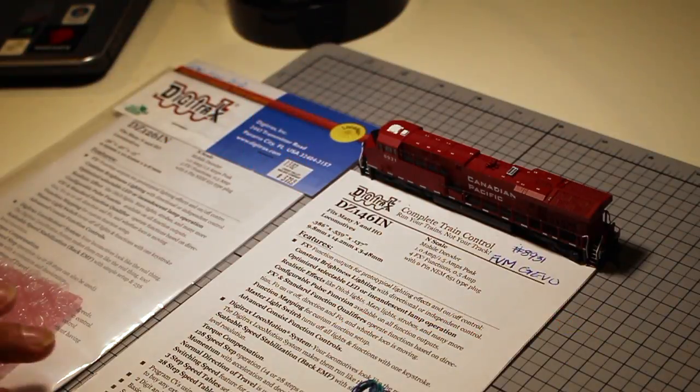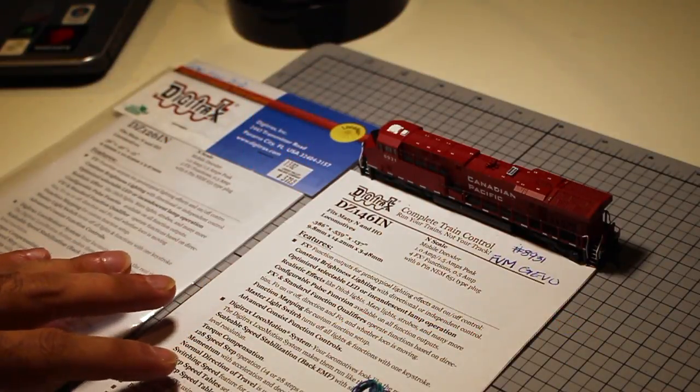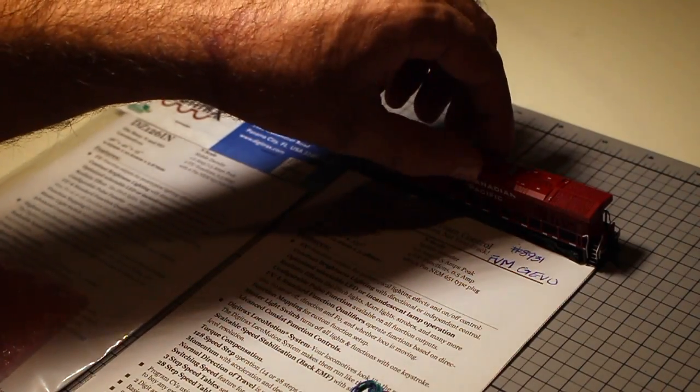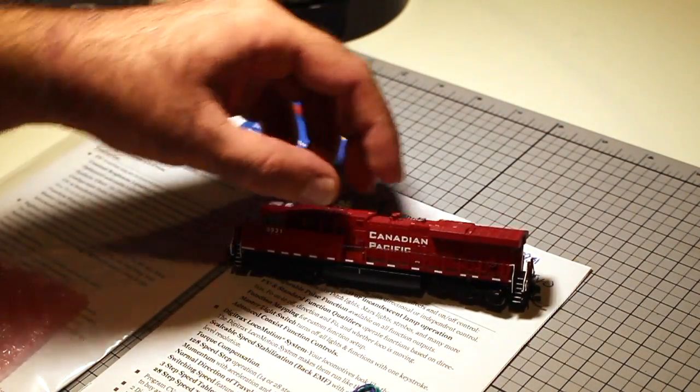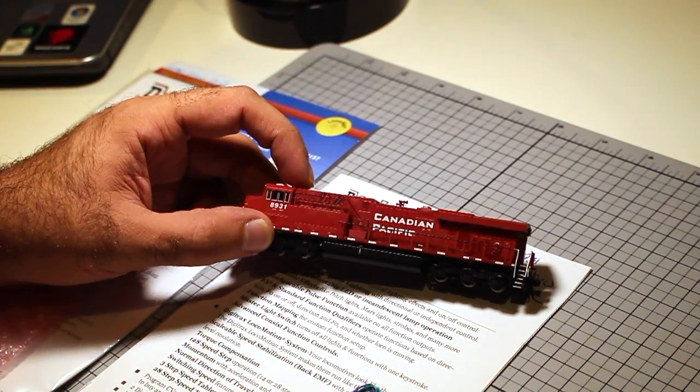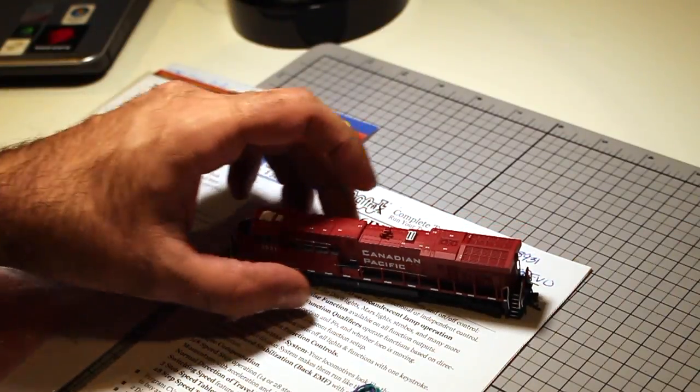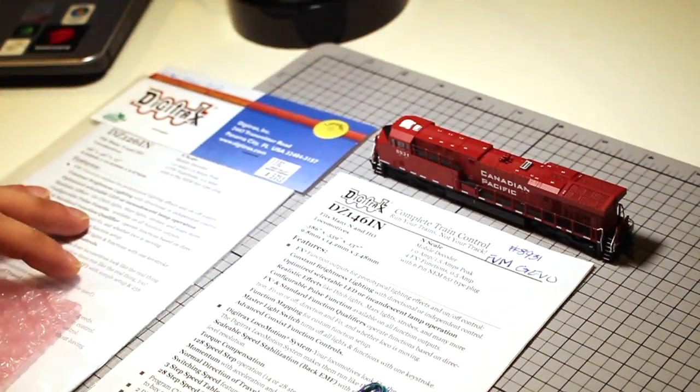Today we're going to do a quick decoder install. We're going to be working on this Fox Valley Canadian Pacific GEVO.